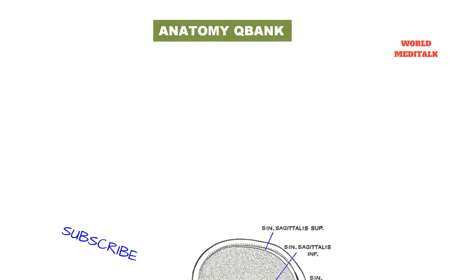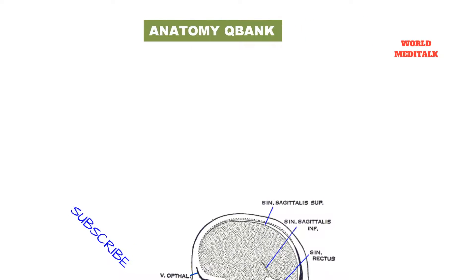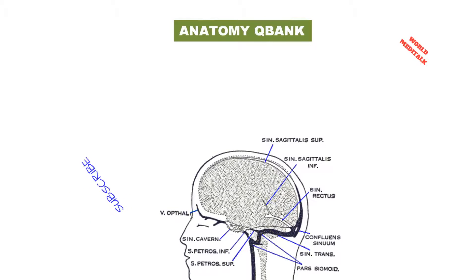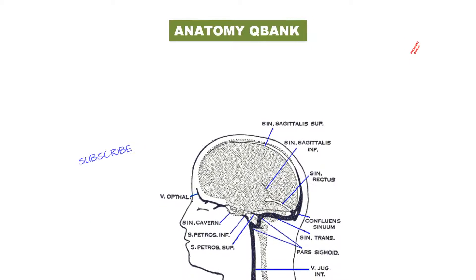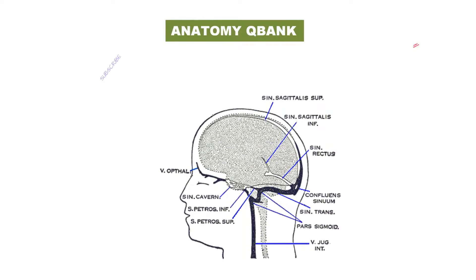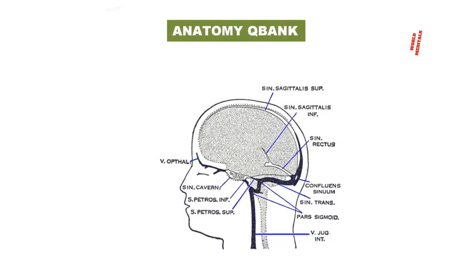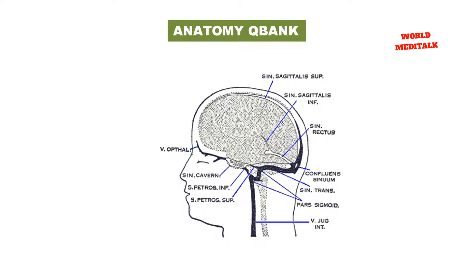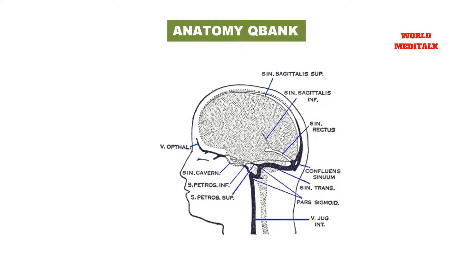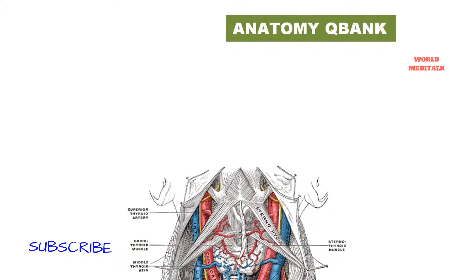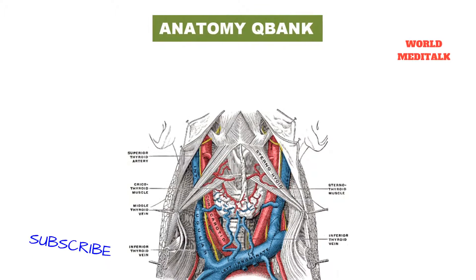Below the skull, the internal carotid artery and last four cranial nerves are anteromedial to the vein. Therefore, it is in contact medially with the internal and then the common carotid artery.